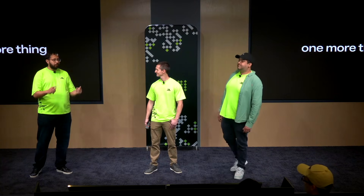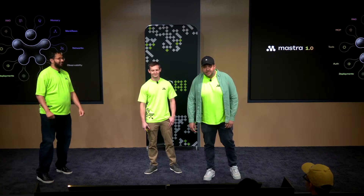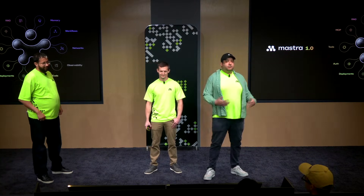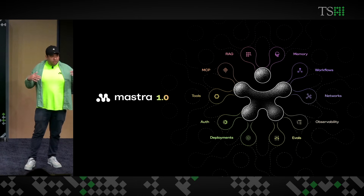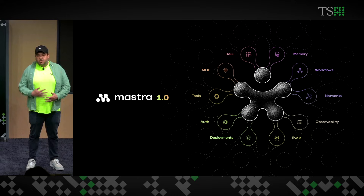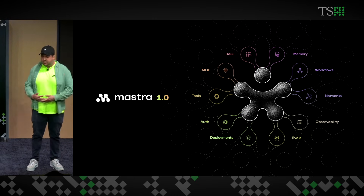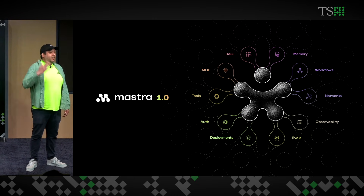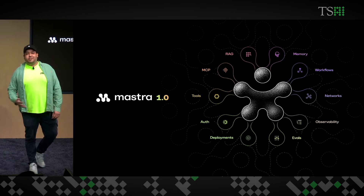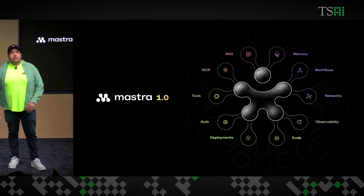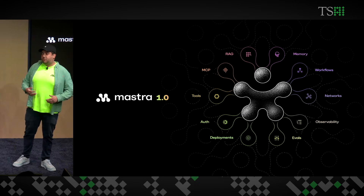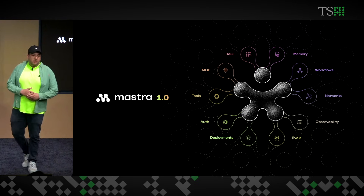And one more thing. Frameworks evolve as industries evolve, and today we cut a 1.0 release of Mastra in beta. Our team ships really fast, and pre-1.0 we were doing a lot of different experiments that all yielded a lot of good learnings. Now that many customers are in production, we wanted to standardize things going forward. We now have standardized workflows, observability, evals — you name it, we've got it.